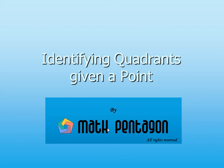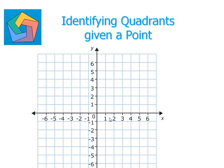Hi and welcome! Today let's learn about identifying quadrants given a point. Let's look at the coordinate plane — we have the x-axis running horizontally and the y-axis running vertically. In the middle we have the point 0. To the right of 0 we have all the positive x values, and to the left of 0 we have the negative x values. Above 0 we have the positive y values.